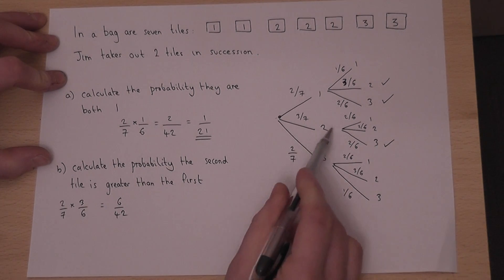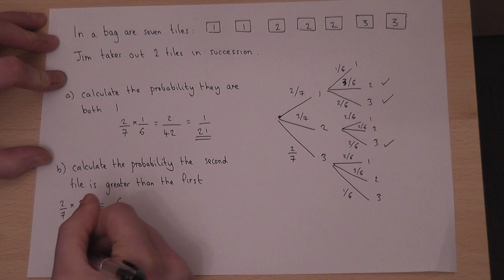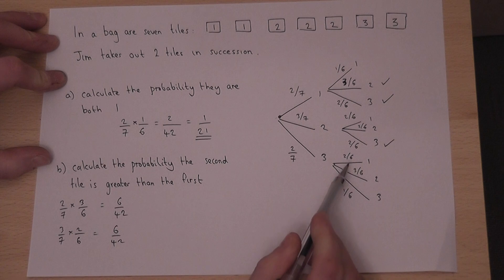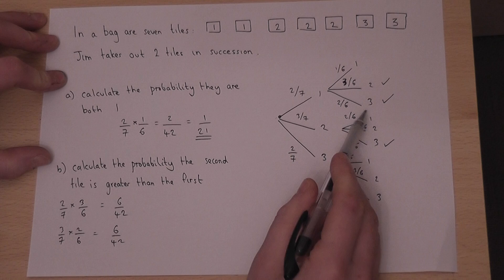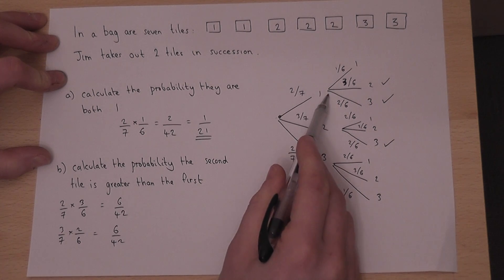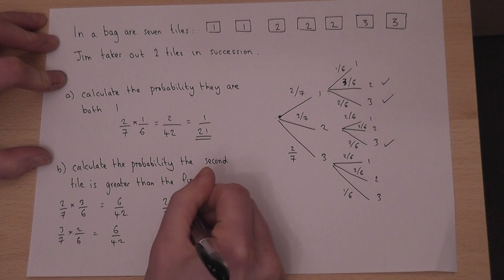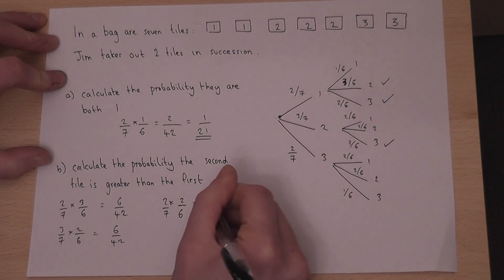And the other option is—I missed that one there for a second—two-sevenths times two-sixths, which is four over forty-two. So there's that option, that option, and also that option there.